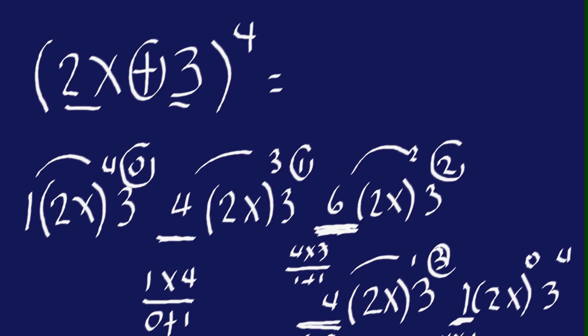Now because this is a plus sign, all the terms in this expansion are going to use the plus sign. Now we just have to clean this up. The first term is 2x raised to the 4th power, and that is 16x to the 4th — make sure you distribute the exponent 4 to the 2 and x.